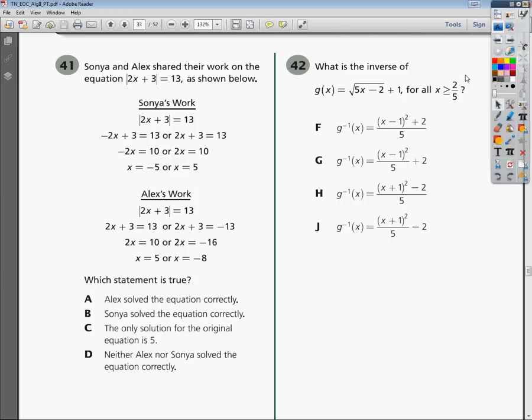This is the Algebra 2 end of course practice test, question number 42. The question says, what is the inverse of g(x) = √(5x - 2) + 1 for all x greater than 2/5.